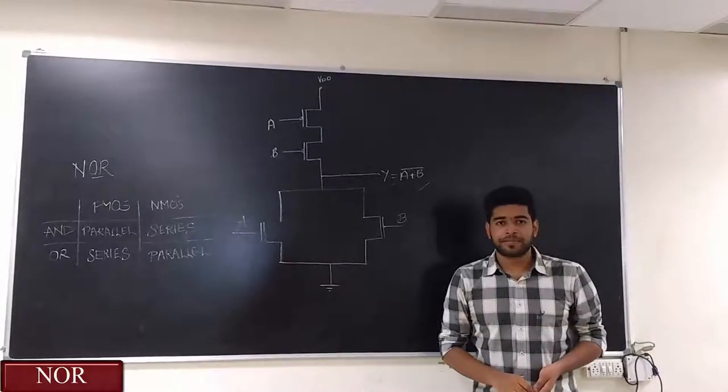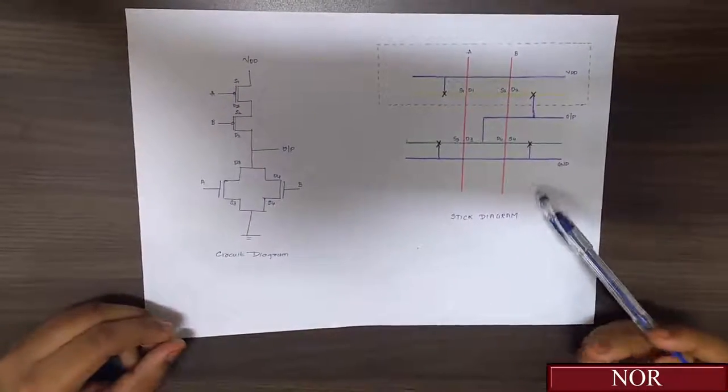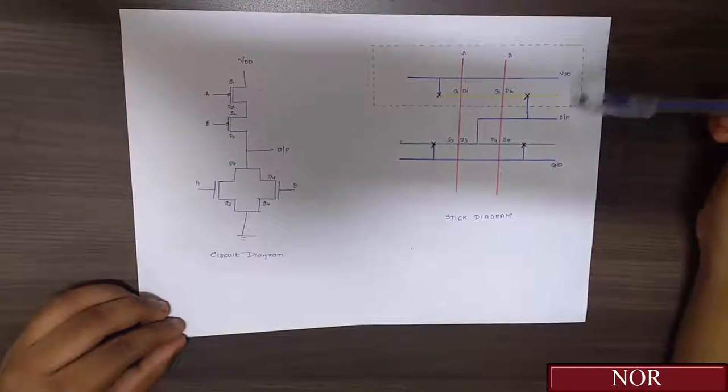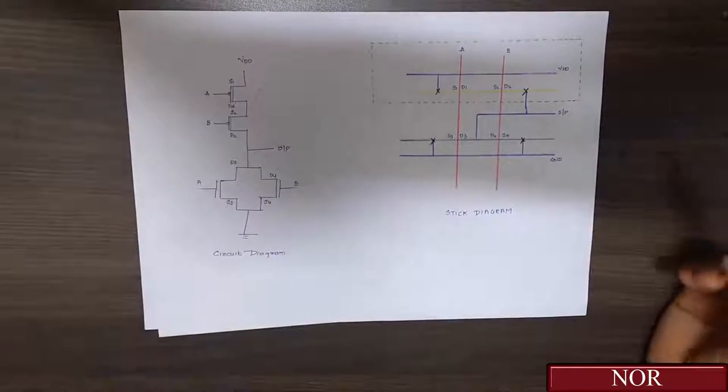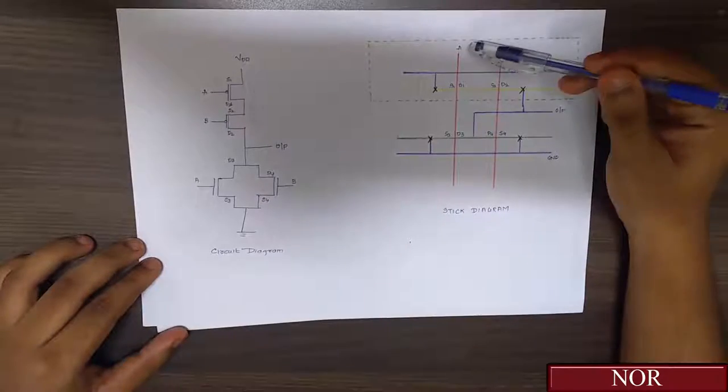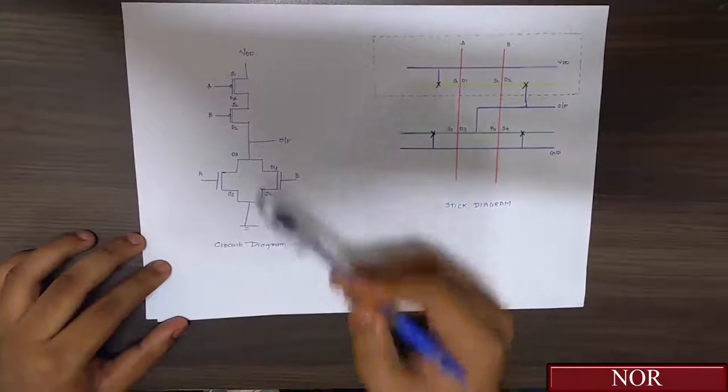Let us draw the stick diagram. This is the circuit diagram of NOR and this is the corresponding stick diagram of NOR. The stick diagram is made from four different lines: VDD, PMOS, NMOS, and GND. Now here the inputs are given through polysilicons which are A and B. The direction we consider here is from A to B.